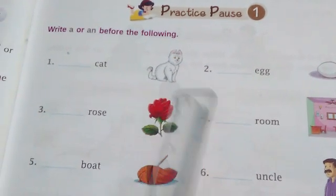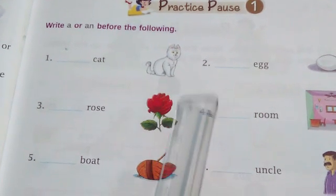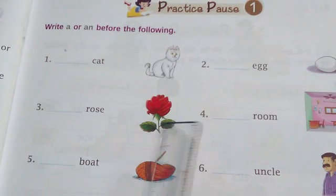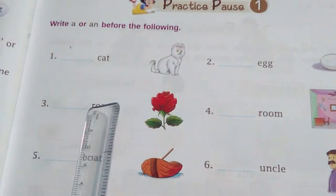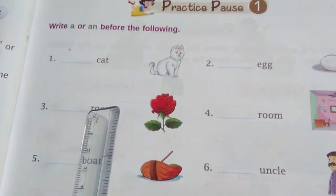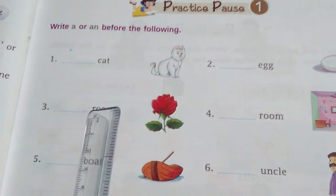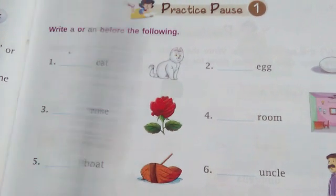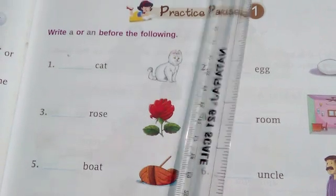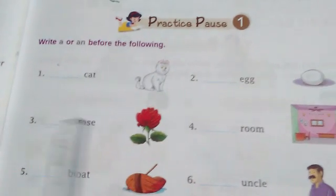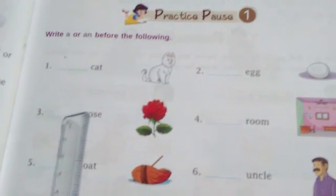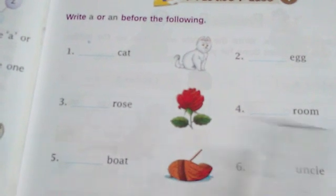What is this? This is a picture of a rose. So R is what? R is a consonant. Yes, remember? So we have to put here what? A. A rose.